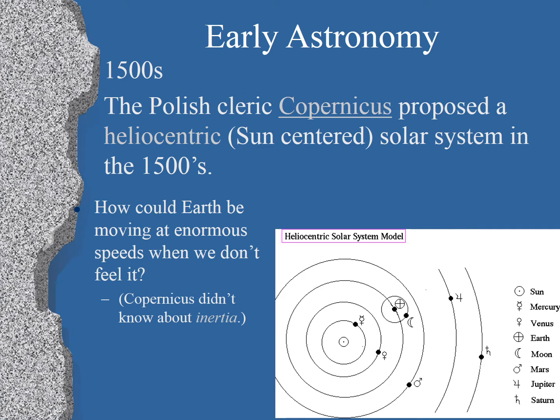In the 1500s, a Polish cleric by the name of Copernicus proposed a heliocentric solar system. Helios is the Sun, so it's a Sun-centered solar system. He didn't get a lot of credit back then because people didn't believe him, because if the Earth was moving so fast around the Sun, why couldn't we feel it? Of course, Copernicus didn't know about things like inertia back then.